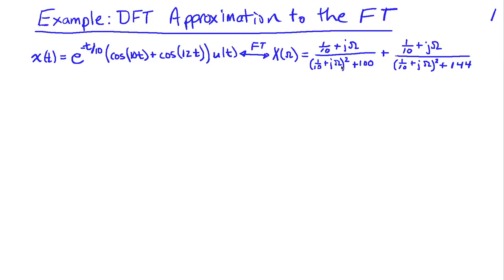As an example of using the DFT to approximate the Fourier transform, we're going to take a signal that we know precisely so we can compute the Fourier transform in closed form. Here's x(t), and it's a damped sinusoid. We've got two sinusoids, one at 10 radians per second and the other at 12 radians per second for their frequencies, and we're going to multiply that by decaying exponential e to the minus t over 10, and this signal will start at zero and go from there, so that's why we've got the u(t) here.